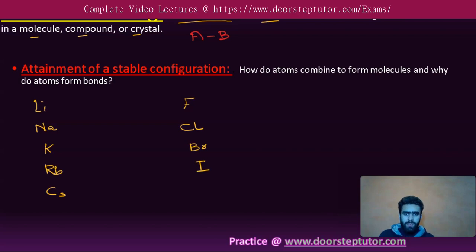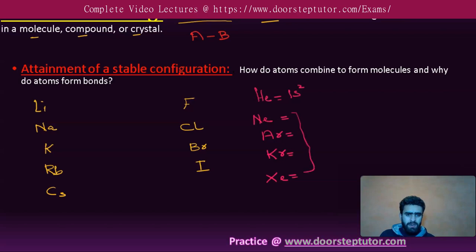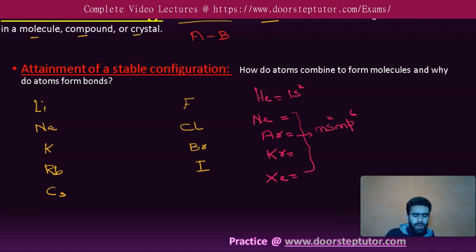Similarly, in the noble gases, we have helium, neon, argon, krypton, and xenon. If we look at helium, it has the electronic configuration of 1s². Similarly, for neon, argon, krypton, and xenon, these all possess the general electronic configuration of ns² and np⁶.